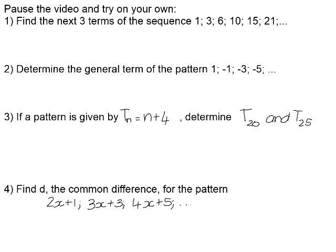In your booklet there are some examples for you to try — please pause the video and try these on your own. Number 1: find the next 3 terms of the sequence 1, 3, 6, 10, 15, 21. Hopefully you recognize this as a sequence of triangular numbers, so we're looking for terms 7, 8, and 9. Term 7: 21 + 7 = 28. Term 8: 28 + 8 = 36. Term 9: 36 + 9 = 45.